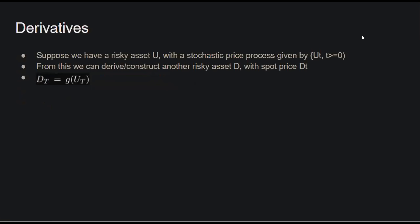So we'll talk about derivatives. Suppose we have some risky asset U with a stochastic price process U(T) for T greater than zero. From this, we can derive another risky asset D with spot price D(T). D at time T would be a deterministic function of U(T) at exactly one point in the future — at some point called capital T, where D(T) equals some function G of U(T). Here U is called the underlying asset, D is the derivative, T is the maturity date, and G is called the payoff function of the derivative.